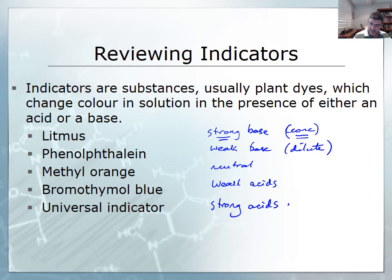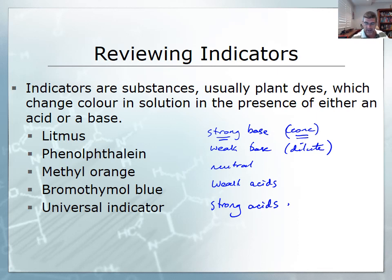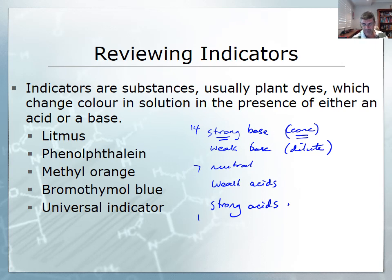You can have a weak base that's very concentrated and therefore has a very low pH. We can also have a strong base that is in very low concentration — very dilute — and therefore it will have a higher pH value. The pH scale roughly goes from around 14 at the top, through seven in the neutral range, and down to one for strong acids.